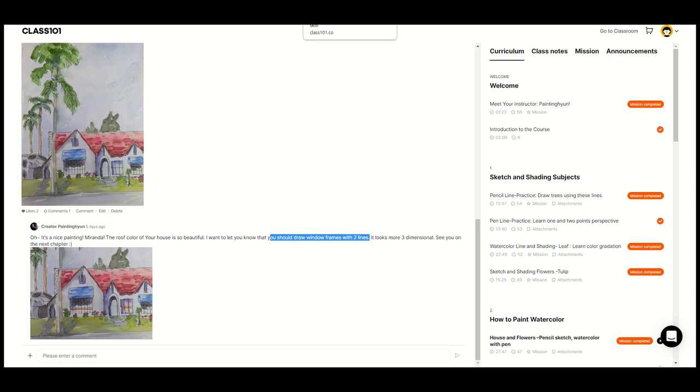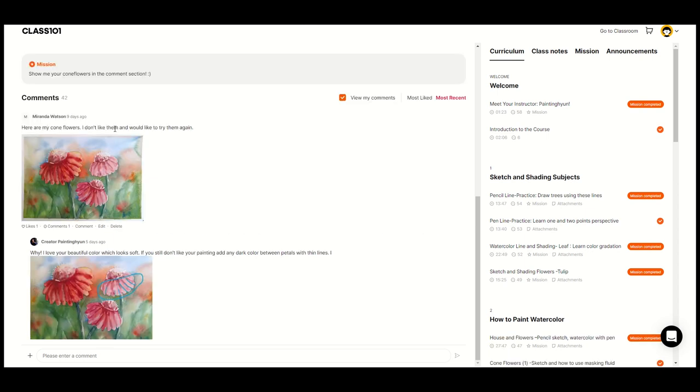All right now on to the cone flowers. Ready for this? Here's mine. I said I don't like them and would like to try them again. She's like why I love your beautiful color which looks soft. If you still don't like your painting add any dark color between petals with thin lines and then she said I but it cut off. So I don't know if that was the end of her comment or she meant to put more but so if I don't like it basically she's saying increase the contrast here and pull the lines out a little bit. So anyway that's cool. That's more than I expected.